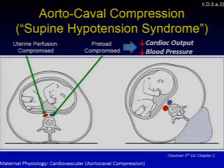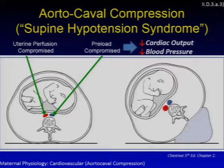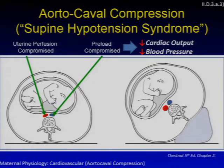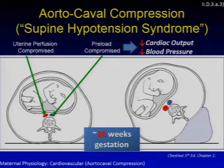There's also the concept of aortic caval compression or supine hypotension syndrome. A woman at full term will have compression of both the aorta and the IVC when she's in complete supine position. That will compromise uterine perfusion as well as preload, translating to a decrease in cardiac output and blood pressure, which can lead to symptoms in some women. By uterine displacement — either by tilt, wedge, or lateral position — you can relieve almost completely these compressions. This can happen any time the uterus exits the pelvis, usually around 20 weeks gestational age.